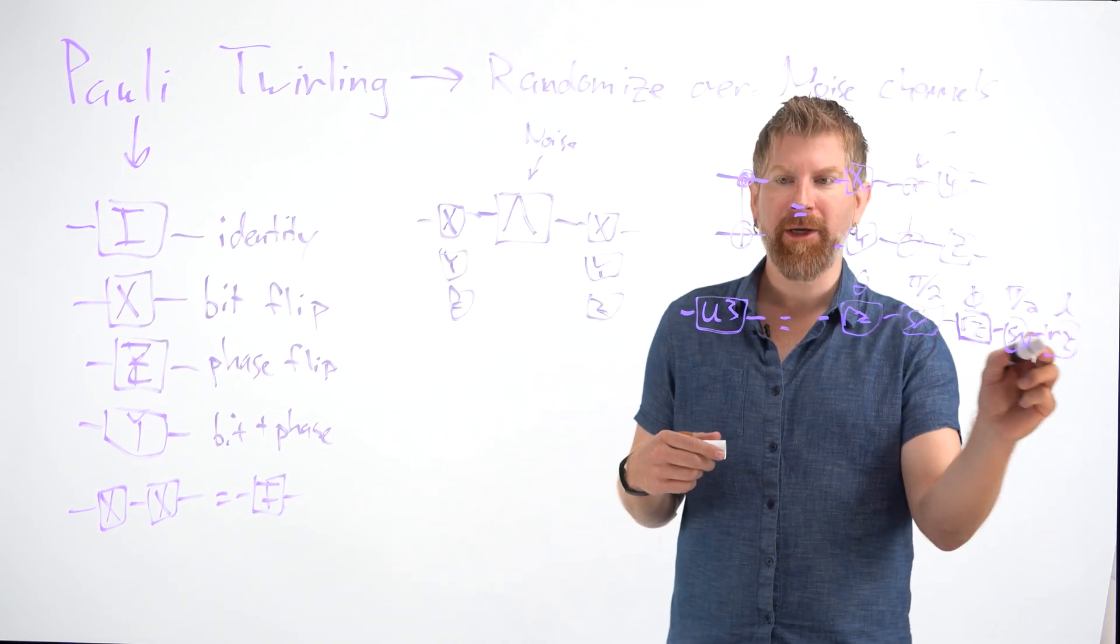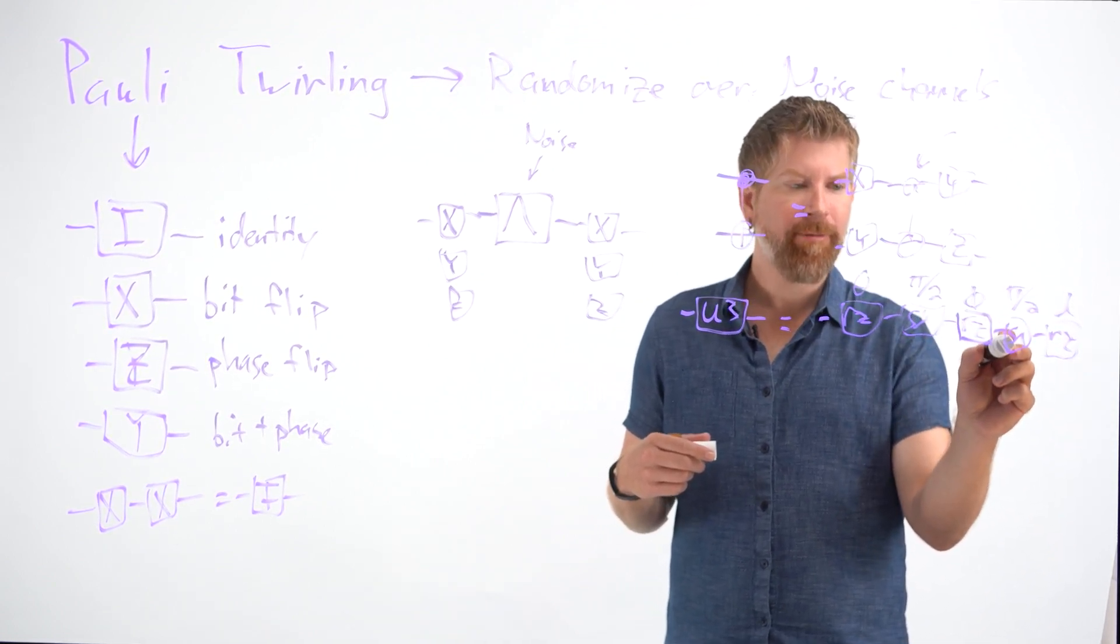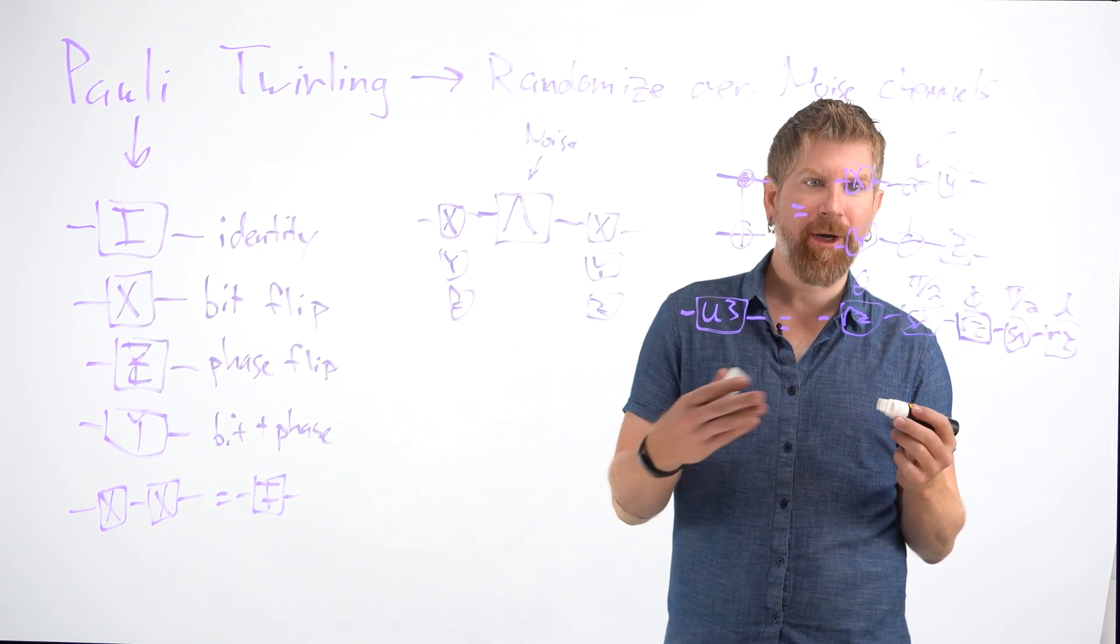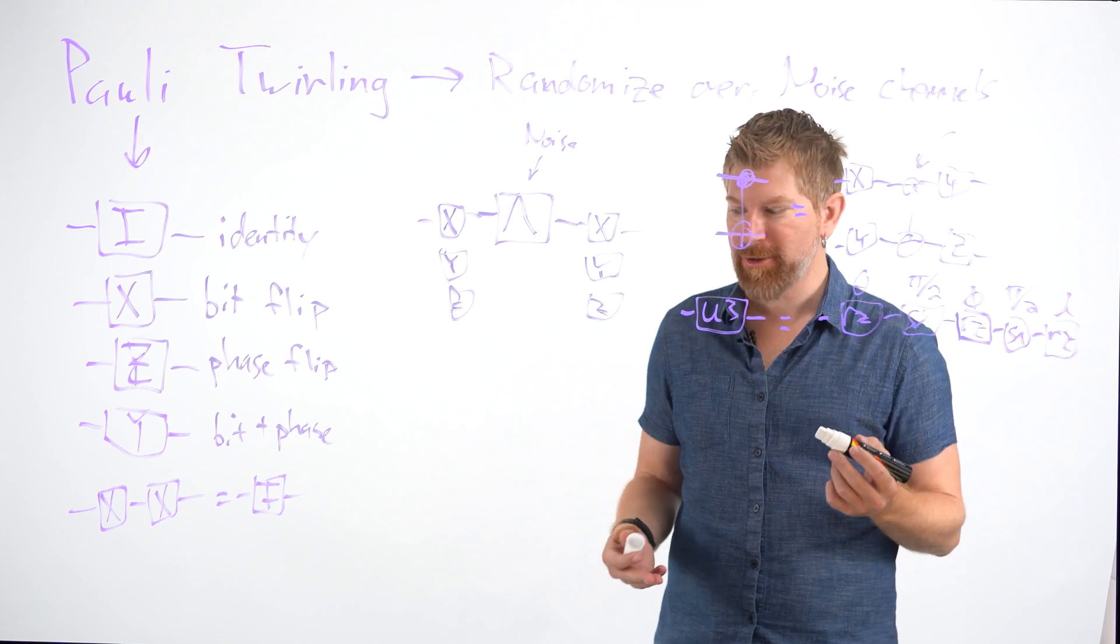And so between any kind of entangling gate, we will have, at most, two of these physical pulses. So the effect is when we transpile our circuit, we get rid of the effect of adding these extra gates.